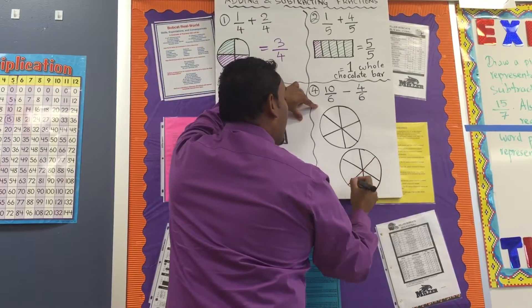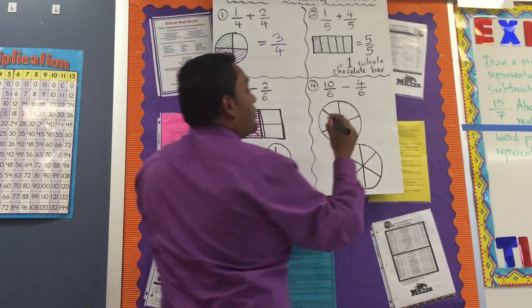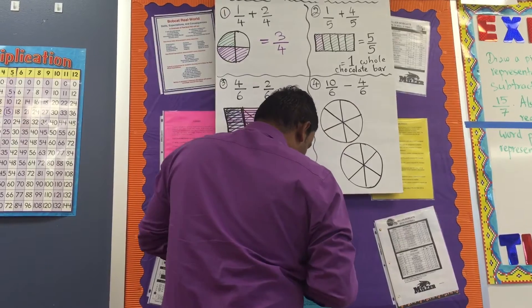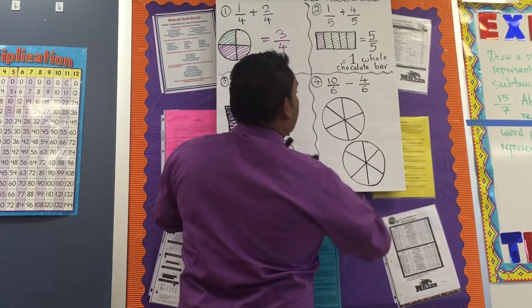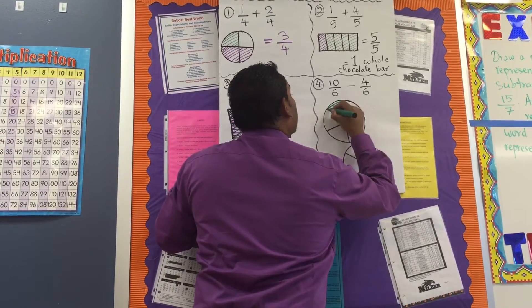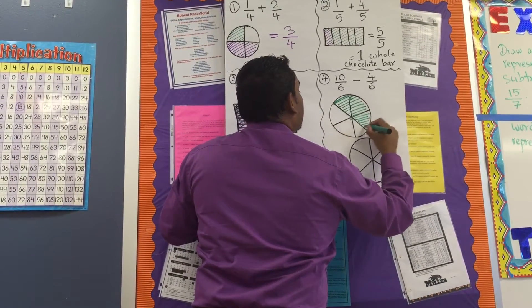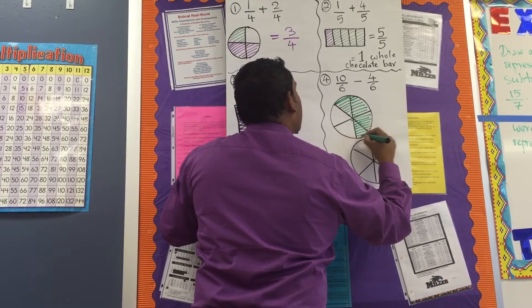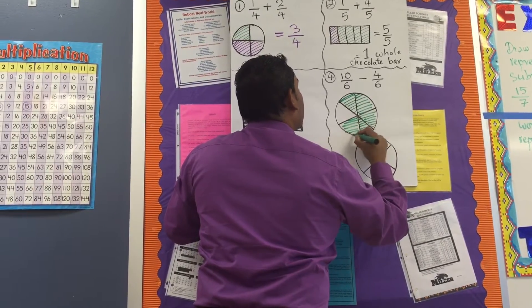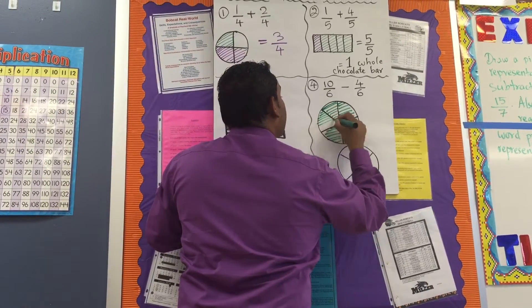Okay. Now, can I shade 10 parts now? Yes. Okay. So, let's do that. So, I'm going to shade 10 parts in here. So, 1, 2, 3, 4, 5, 6. Oh, I'm done with 6 out of 6.